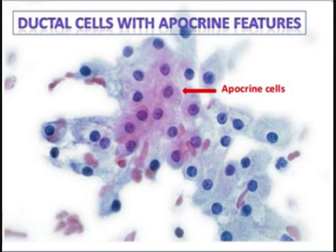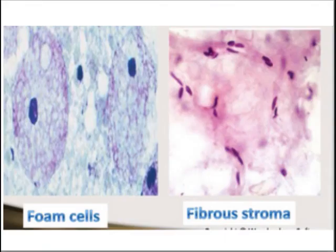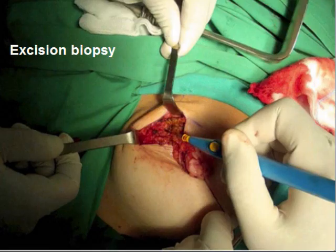Fine needle aspiration cytology is a simple procedure where cytology slides are made and studied under the microscope. Cytology revealed benign sheets of benign cells, with some showing apocrine changes with pink cytoplasm. There were also foamy macrophages in the background and fibrous stroma.